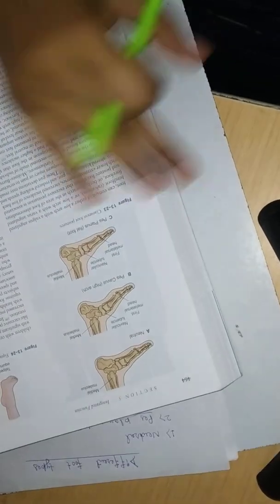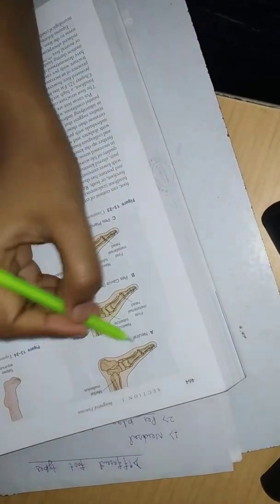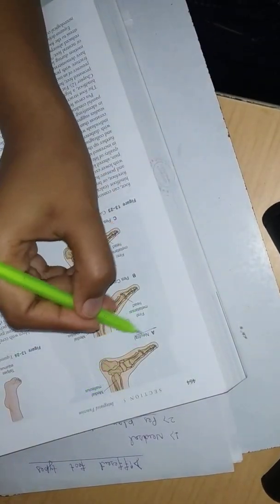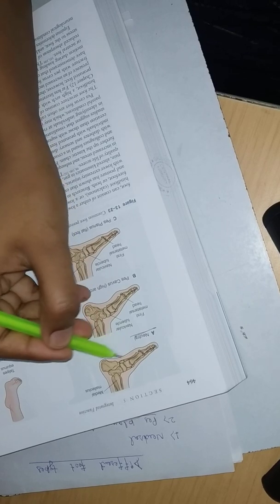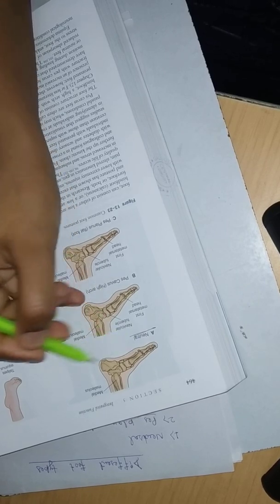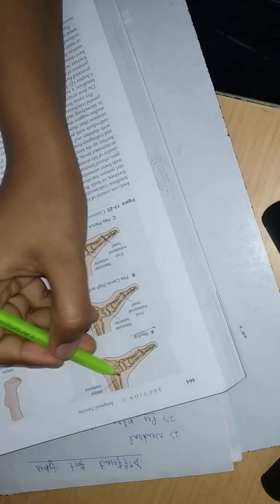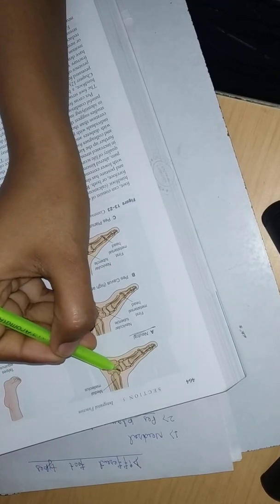This first diagram shows a neutral foot. You can see this is a neutral foot. Here there is no arch high or no arch low. If we were drawing the line from here, this is our calcaneus bone.